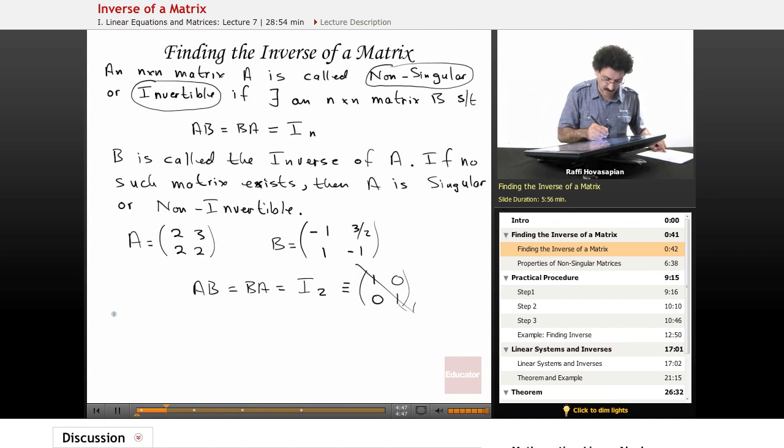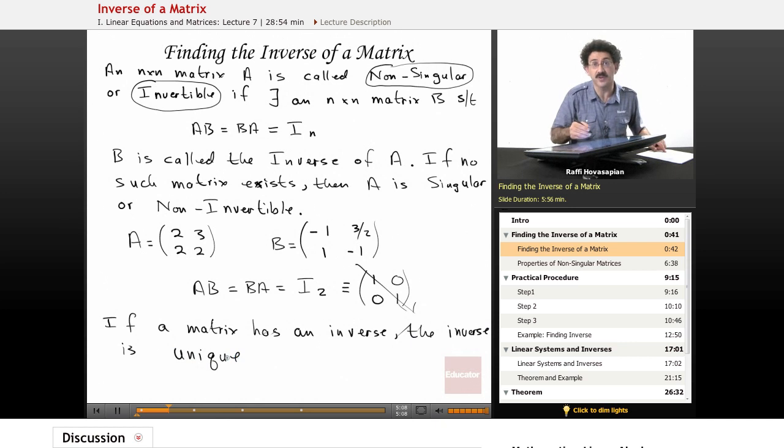Now, if a matrix has an inverse, the inverse is unique. Again, you can't have two or three or four different inverses. You only have one.